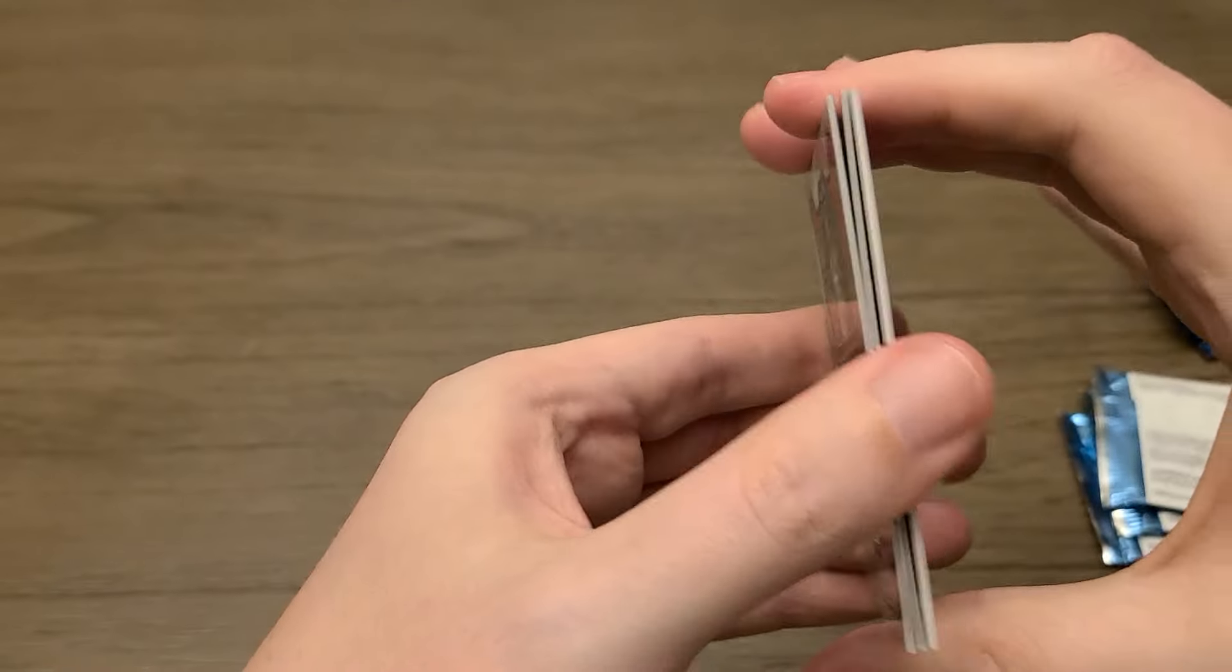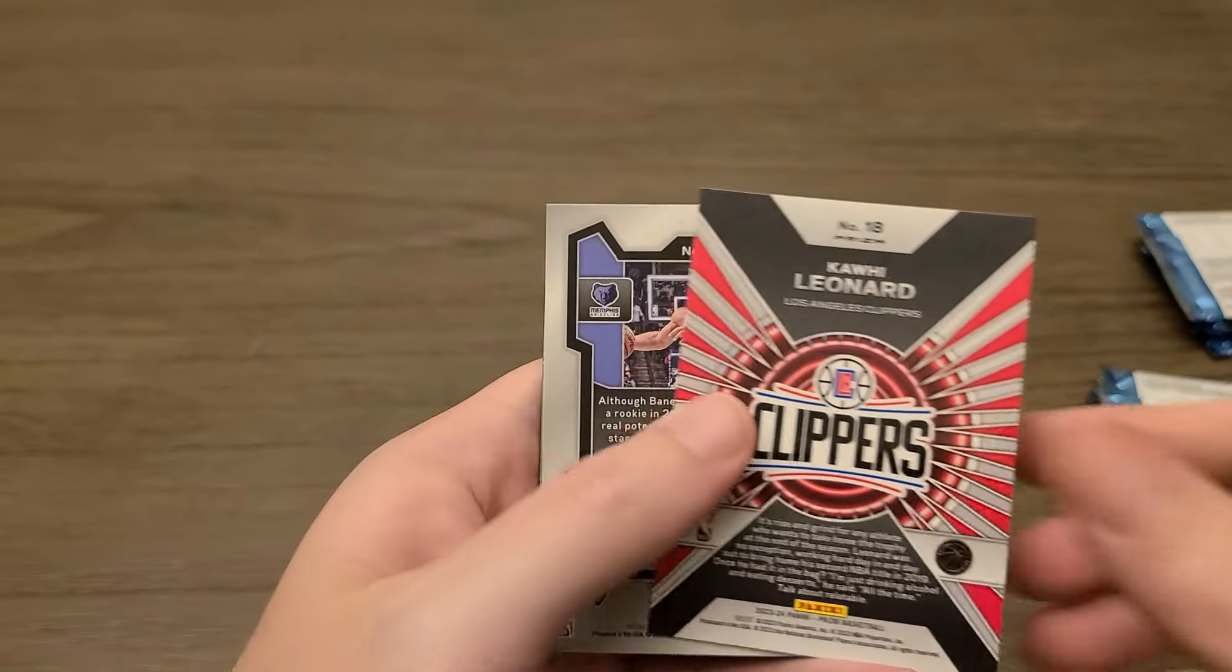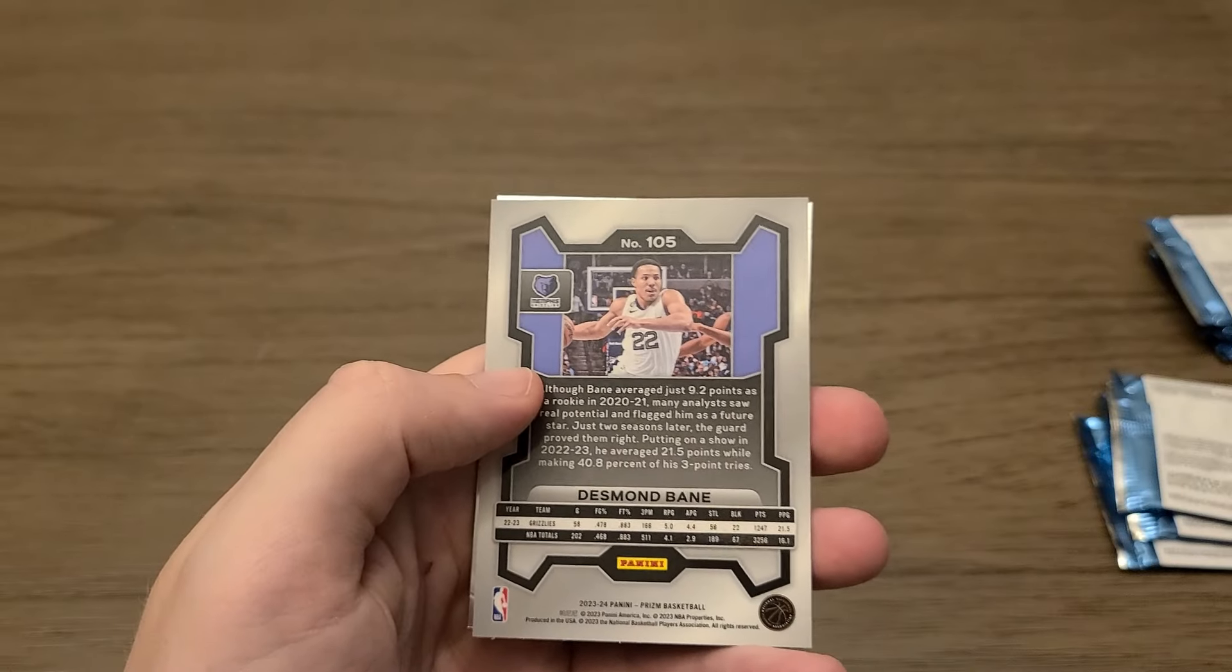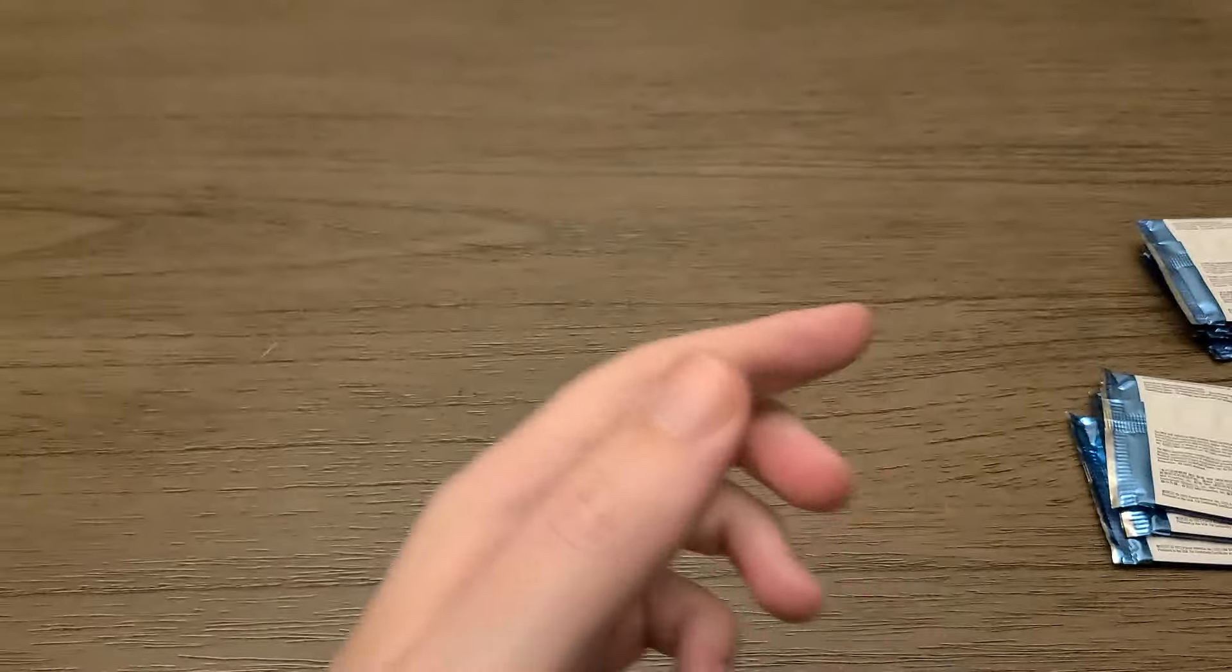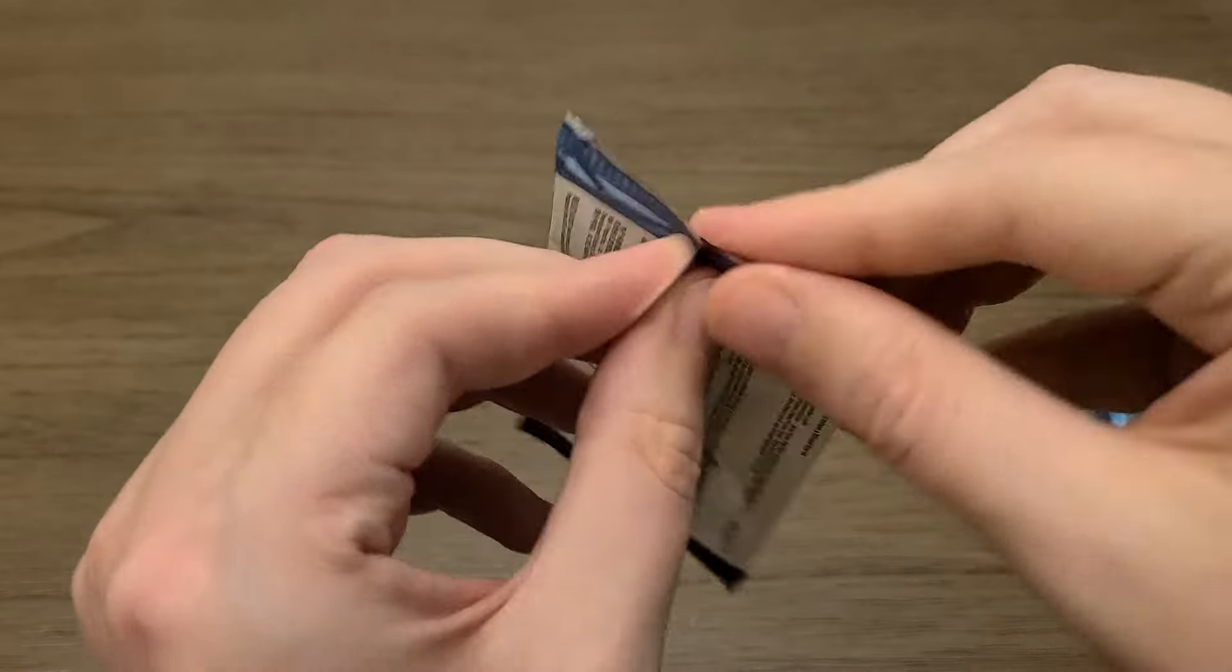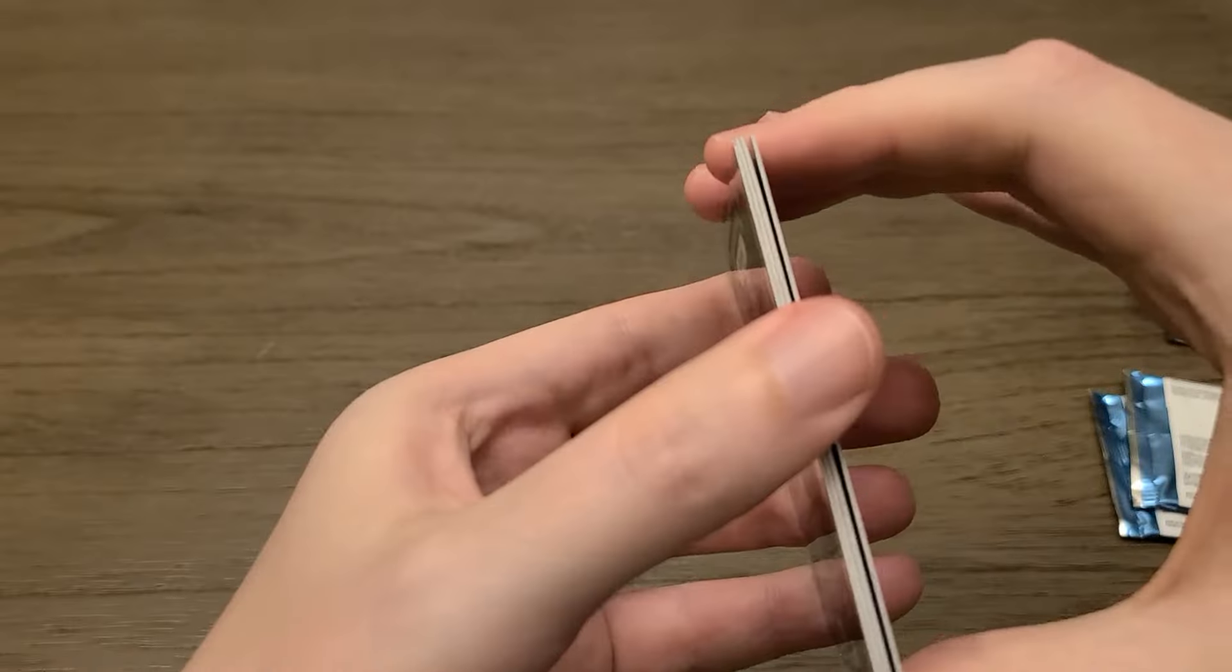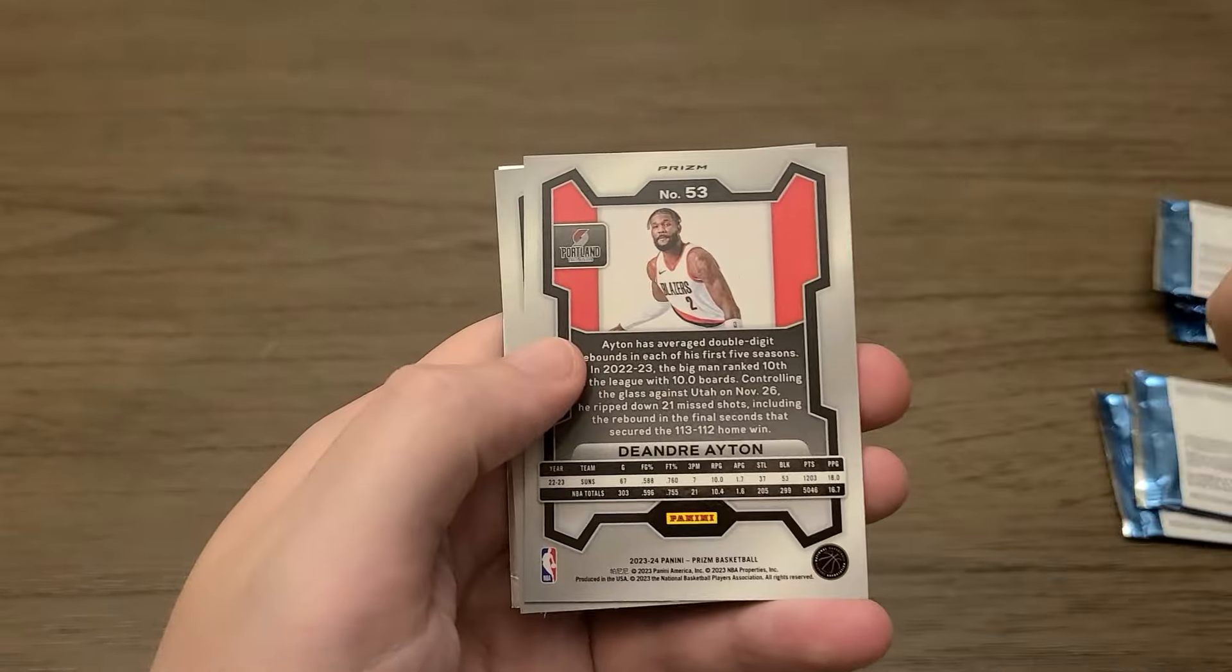Thanks again guys for tuning in and watching this video. Another Kawhi Leonard. This one is a Dominance insert. It says Prism, so maybe it's a red. Desmond Bain and DeMar DeRozan. Alright, four. Seven packs to go. Let's see what else we can get. Another autograph would be cool, but I think one per box is probably a fair amount.